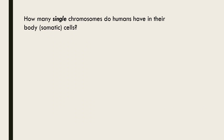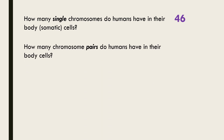Humans have a total of 46 single chromosomes in their body cells, also called somatic cells. Because somatic cells are diploid and there are 46 chromosomes in total, there are 23 pairs — 46 divided by 2 is 23.